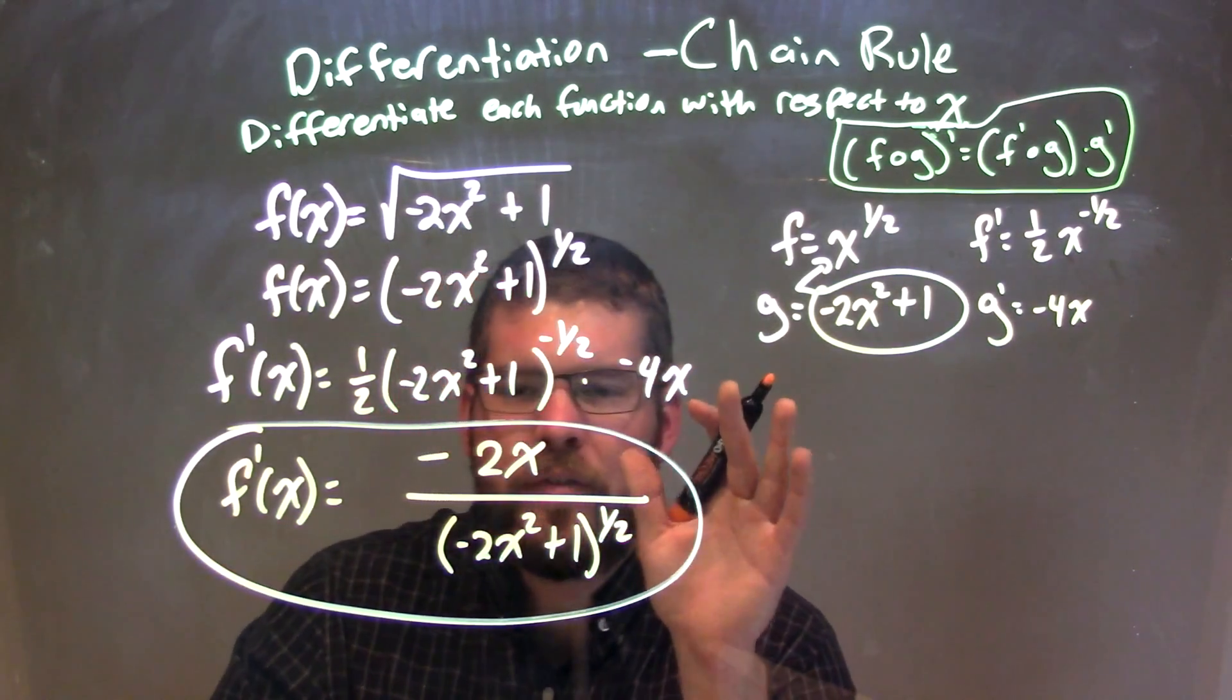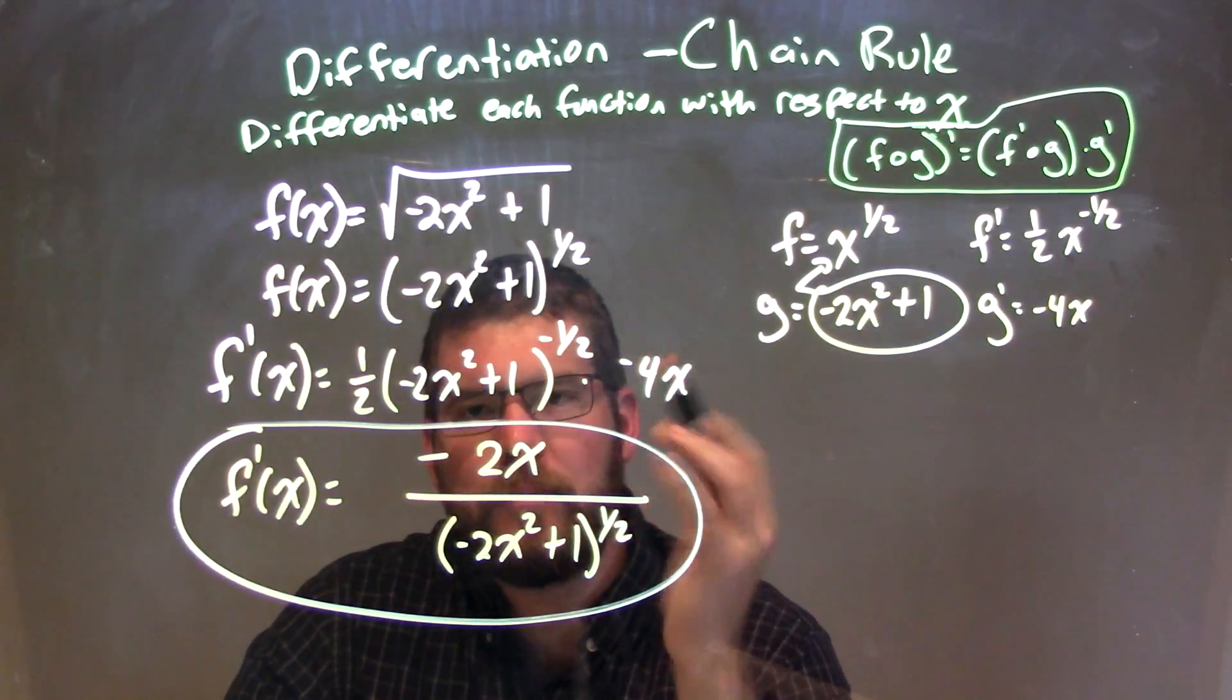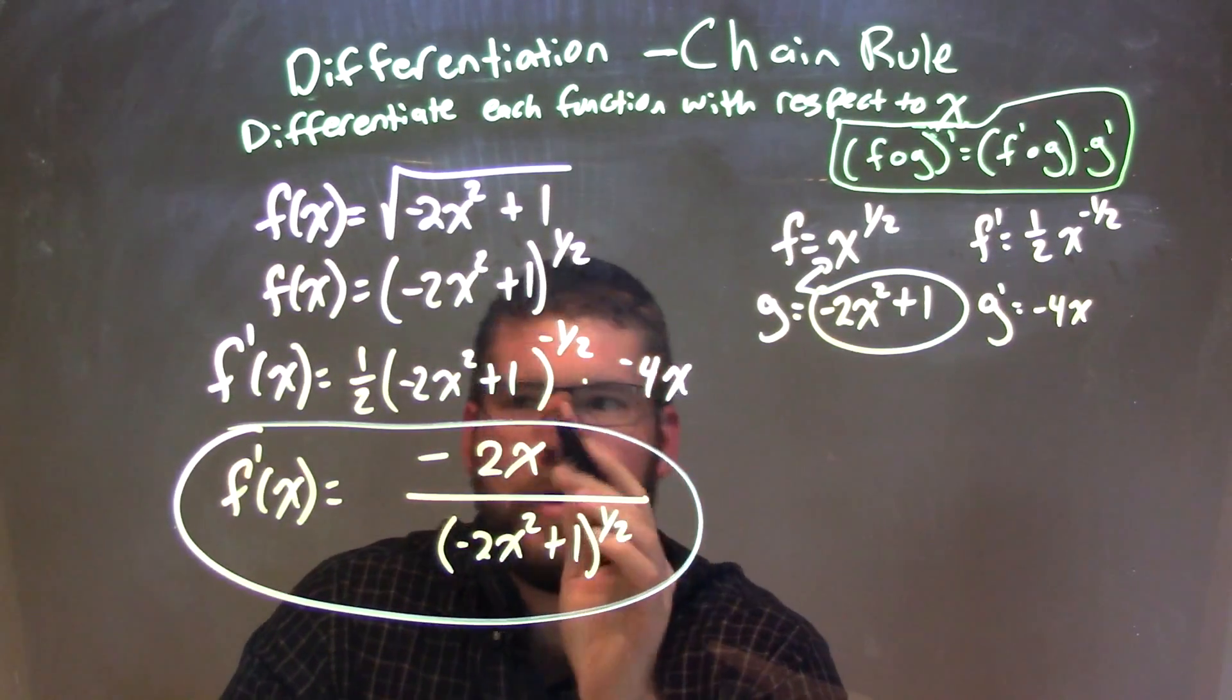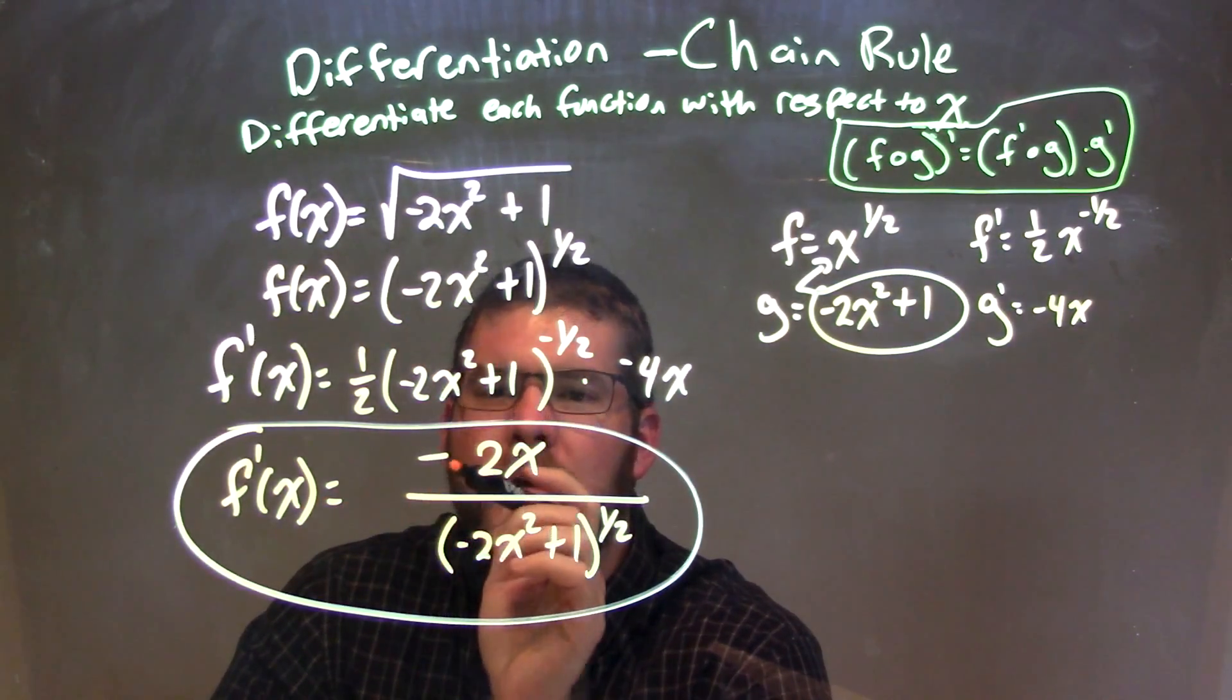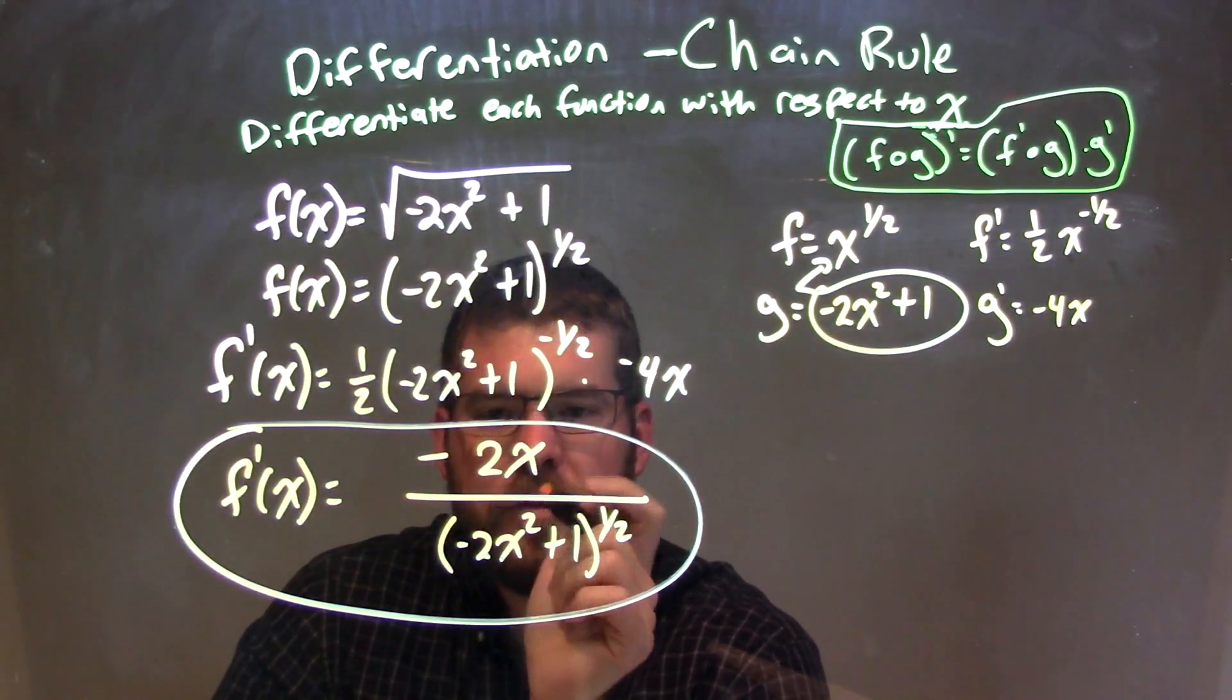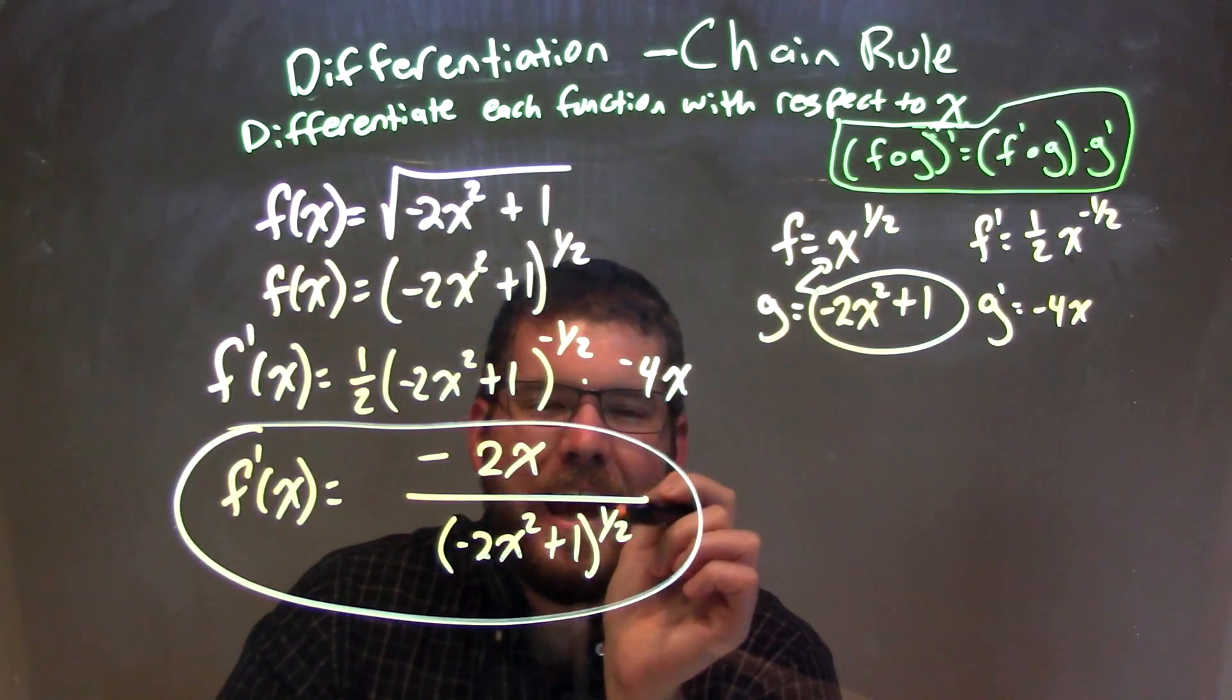At this point, I have my derivative, but I need to simplify. And in my simplification, I'm going to make my exponents positive and simplify and multiply some things out. I have my final answer here of f prime of x is equal to negative 2x over parentheses negative 2x squared plus 1 close parentheses to the positive 1 half power.